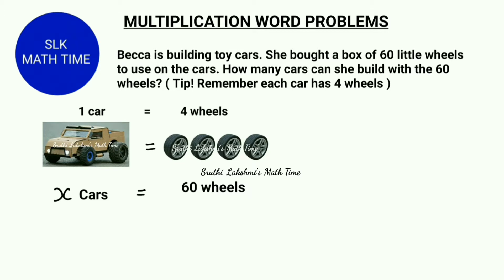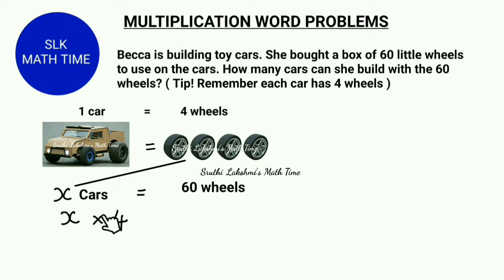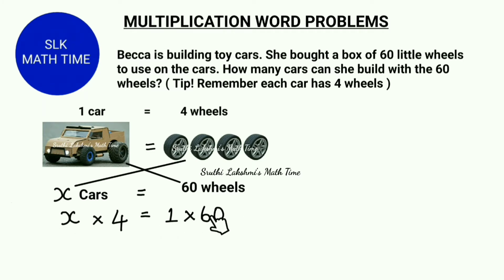Because the word problem says she bought a box of 60 little wheels to use on the cars. So let's cross multiply. Let's first do 4 into x, or x into 4. And then we have to cross multiply 1 into 60. Both of these equations are equal and give the same answer. So here 1 into 60 is basically 60.